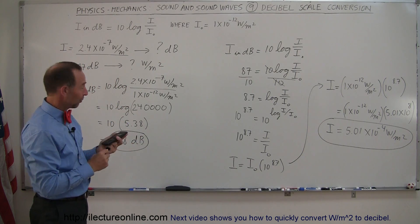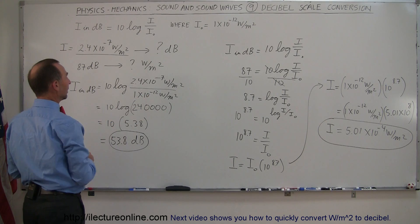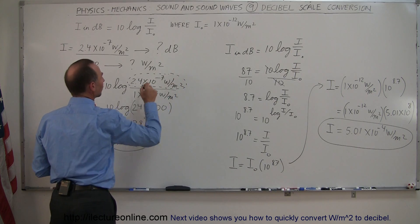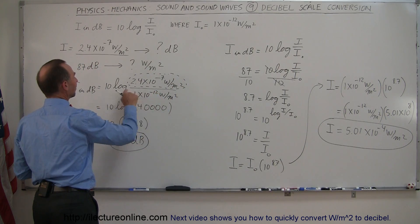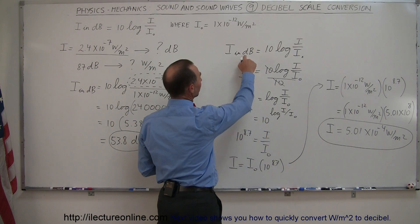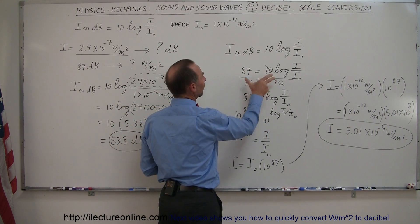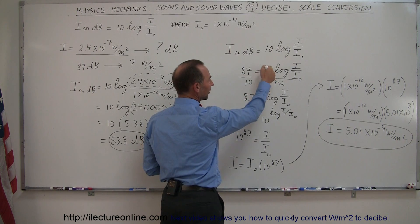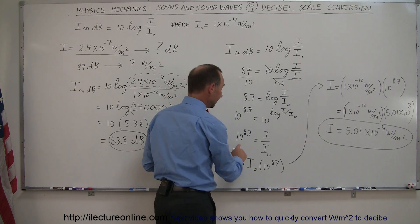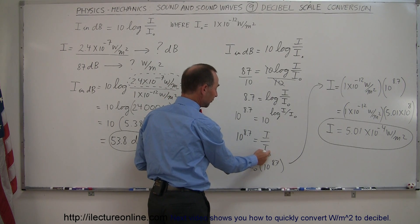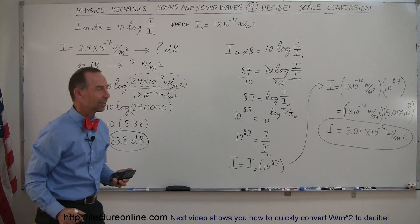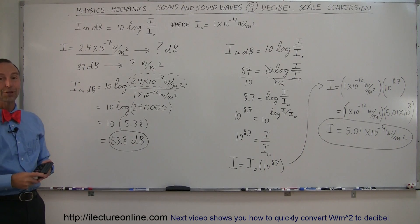And that's how you do that. The first conversion is very straightforward: you plug in the value of intensity in watts per square meter, divide by I-sub-nought, take the log, and multiply by 10. The second is a little more difficult: put in the sound intensity in decibels, divide both sides by 10 to remove the coefficient, take the antilog, plug in I-sub-nought, and multiply to get the intensity in watts per square meter.